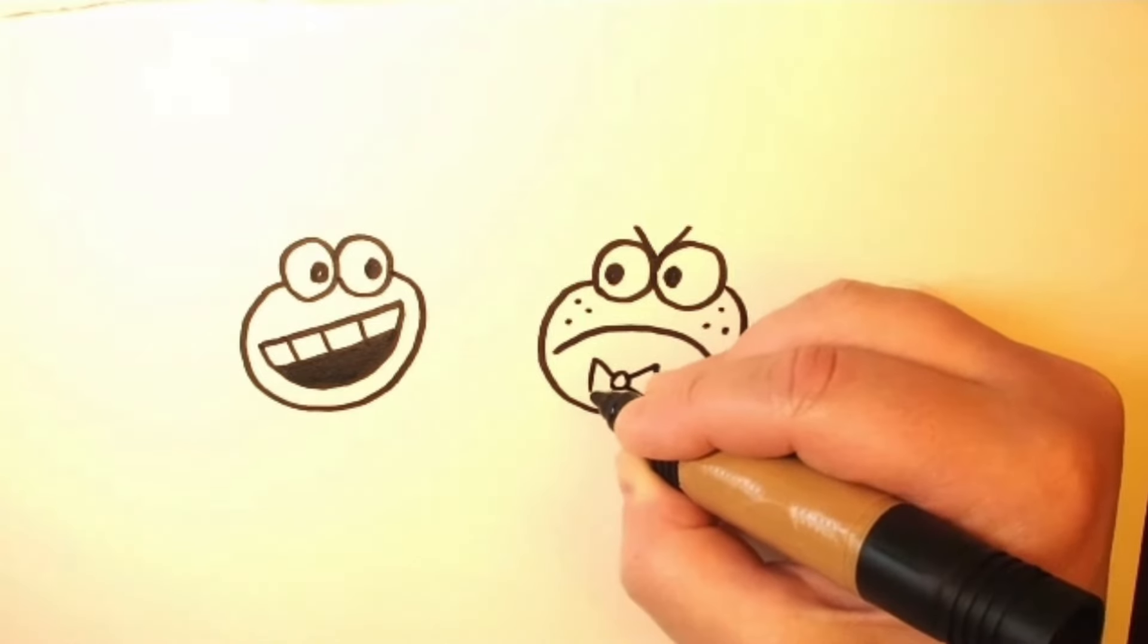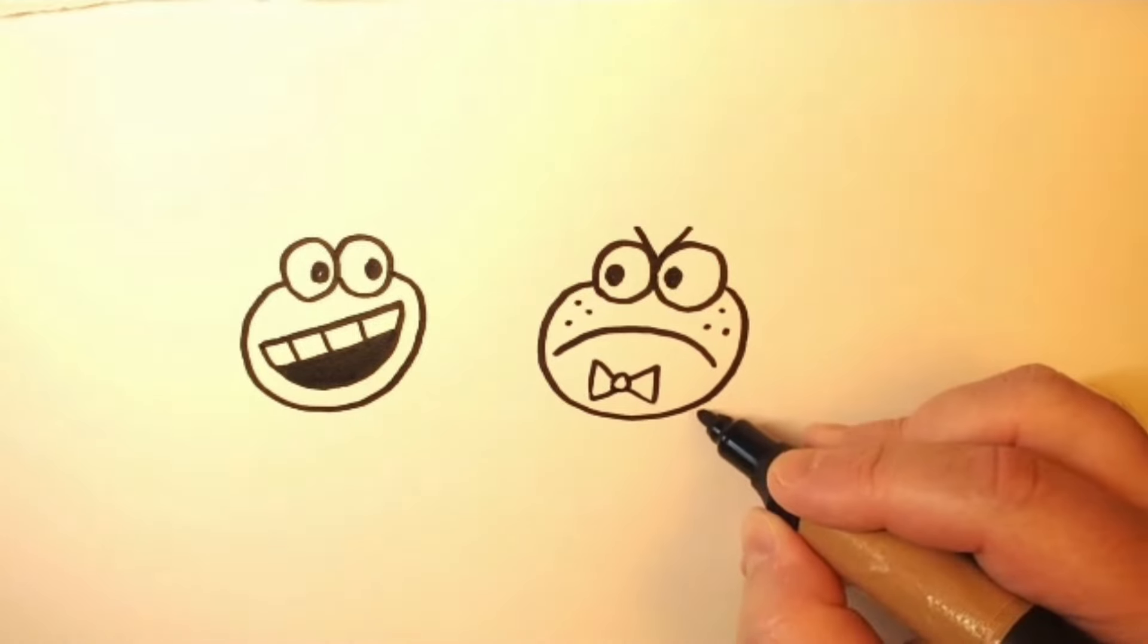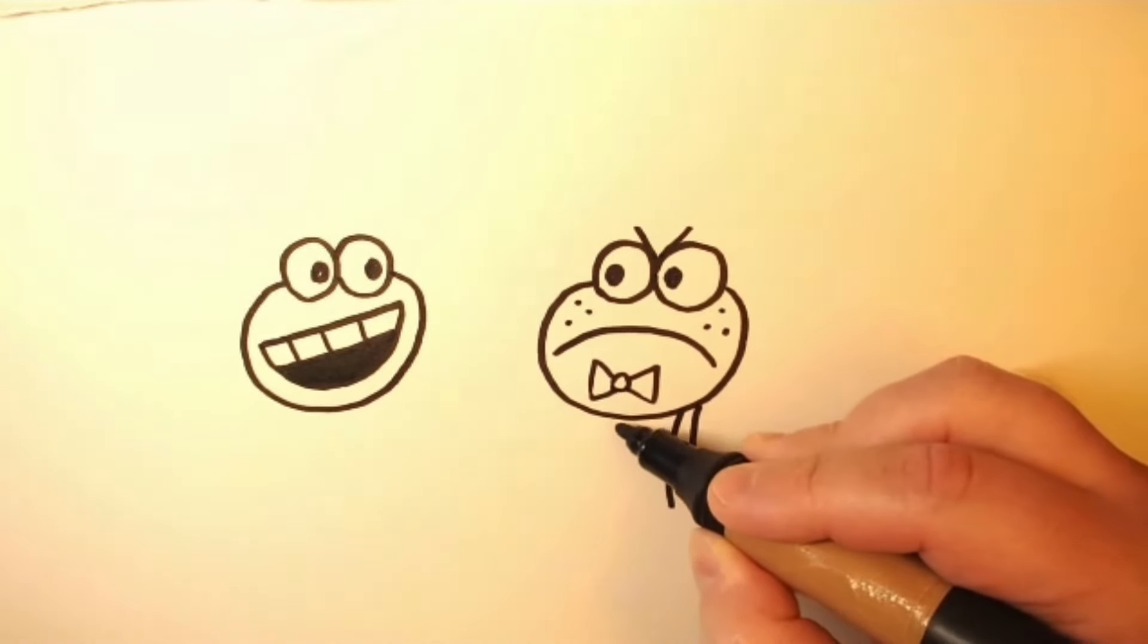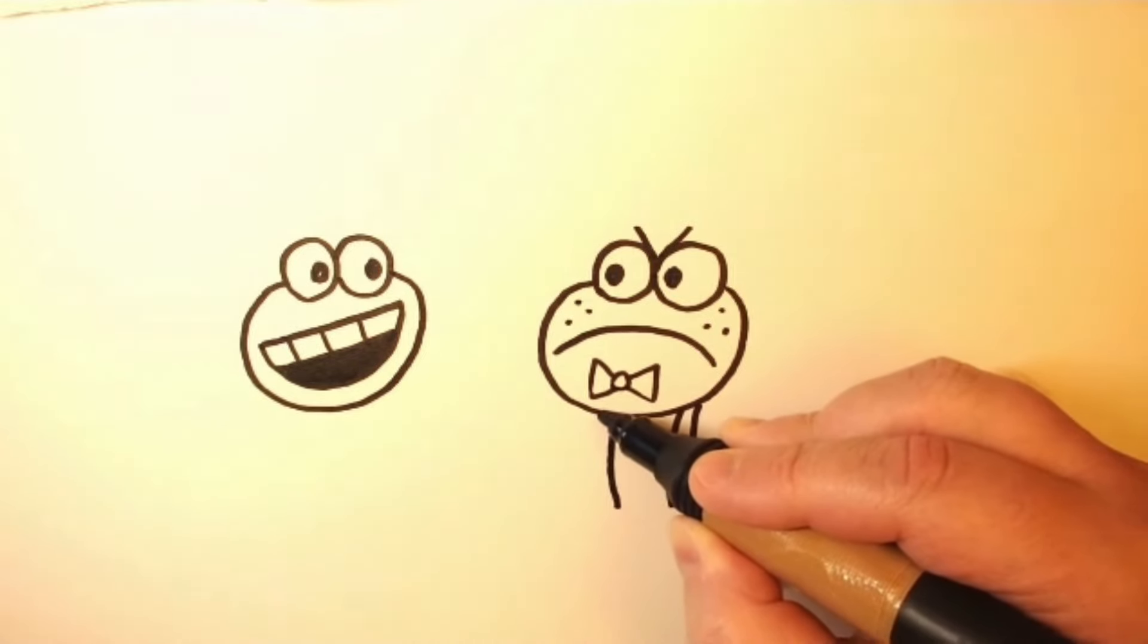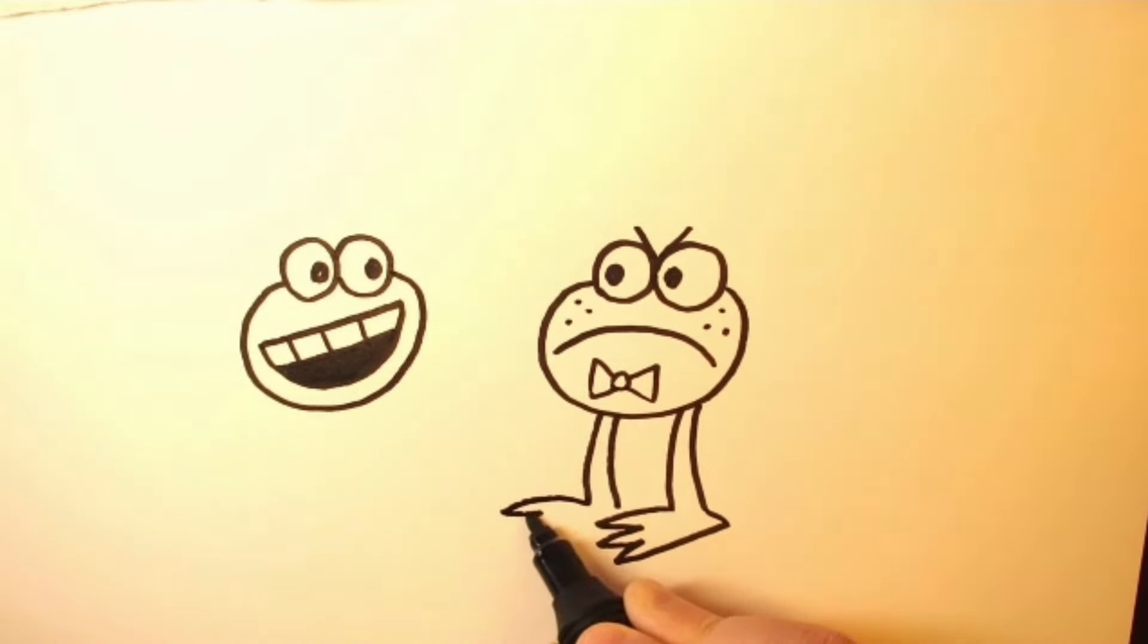And so he has a little bow tie here at the bottom, he's got those little freckles and his legs are basically just kind of curved lines like this. And his feet are kinda triangles with some W's at the end, pretty easy.